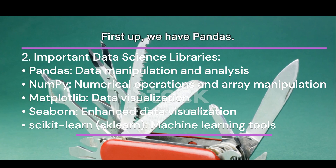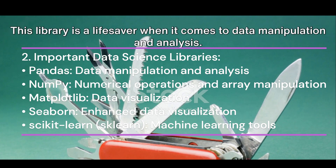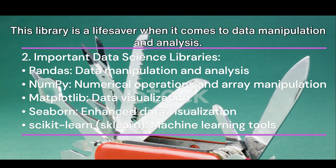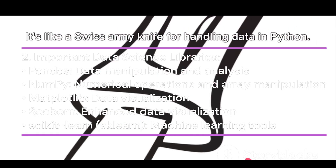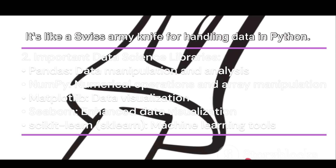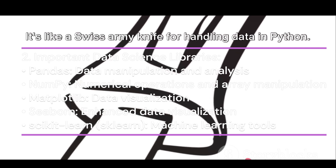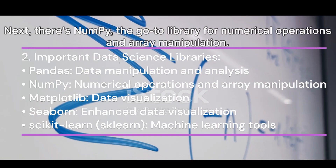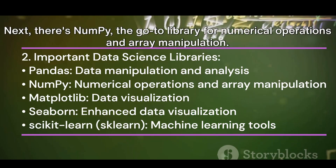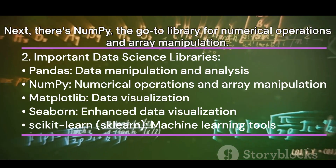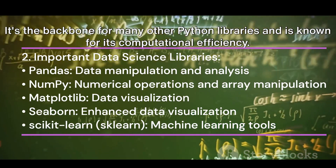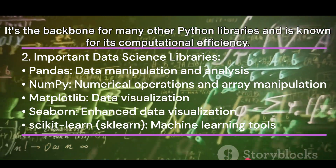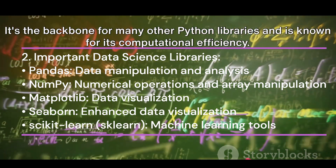First up, we have Pandas. This library is a lifesaver when it comes to data manipulation and analysis — it's like a Swiss army knife for handling data in Python. Next, there's NumPy, the go-to library for numerical operations and array manipulation. It's the backbone for many other Python libraries and is known for its computational efficiency.